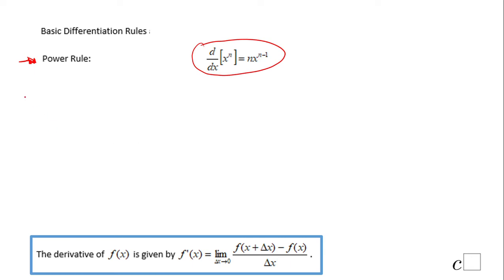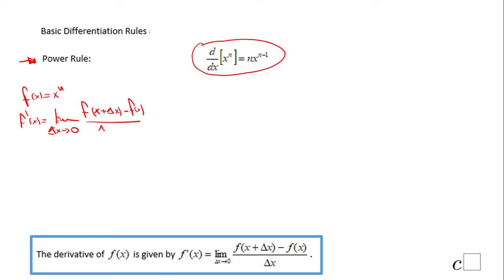So let's see how the proof looks. If the function is x to the n, f prime of x will be the limit as delta x approaches zero of f(x + delta x) minus f(x) over delta x. In this case we have the limit as delta x approaches zero of (x + delta x) to the n minus x to the n over delta x.